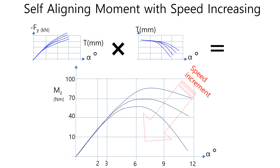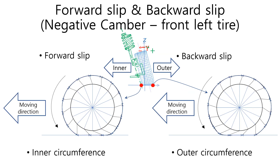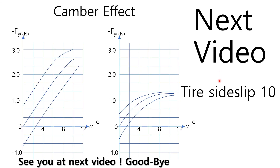If you watch the previous videos, you can easily understand upcoming videos. I explained the self-aligning moment with the speed increasing. Recently, I explained the forward slip and the backward slip for the tire with camber. The next video will be tire side slip part 10, where I will explain the camber effect on lateral force. You can catch the brand new videos by free subscription. So, what are you waiting for? See you in the next video. Goodbye, guys.